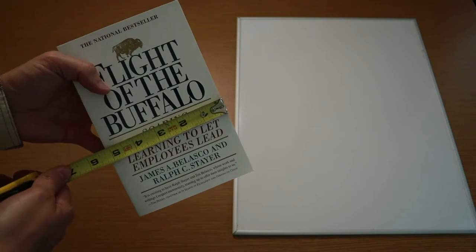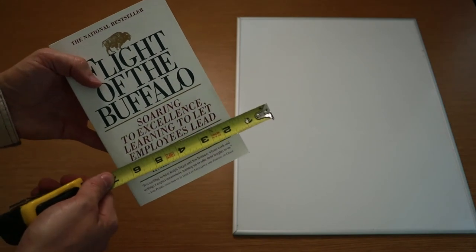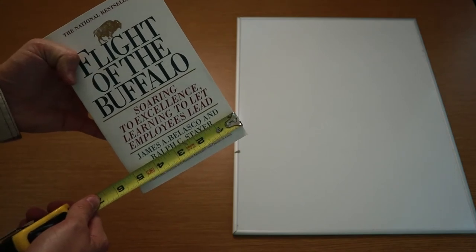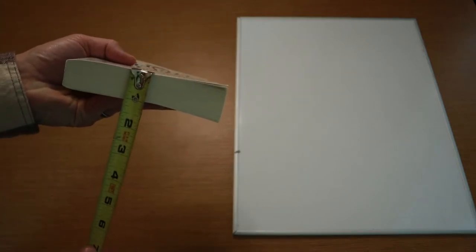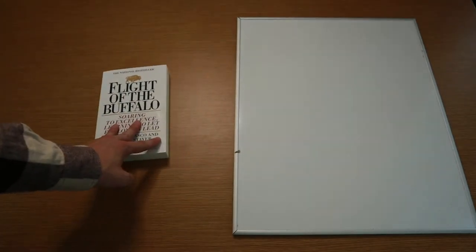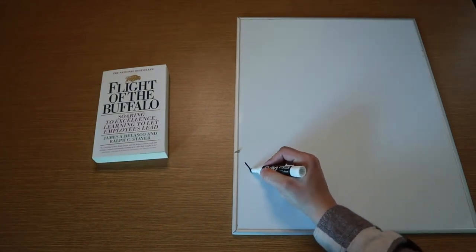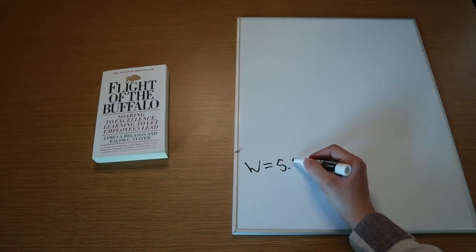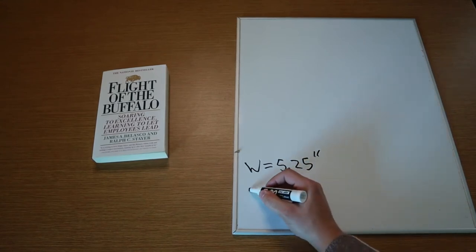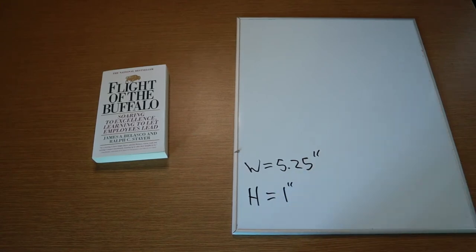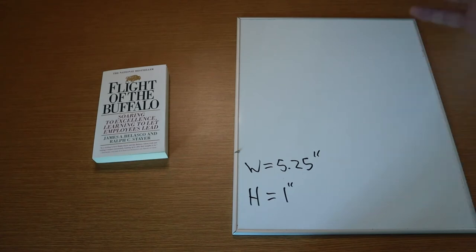The width is going to be the shortest dimension across the face, and that is 5.25 inches. Then we need our height or depth, and in this case that's going to be 1 inch even. So we have width equals 5.25 inches and height equals 1 inch. Let me write those down before I forget: width = 5.25 inches, height = 1 inch.